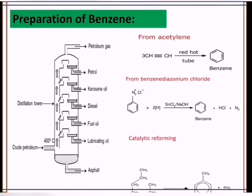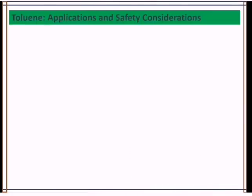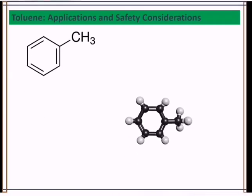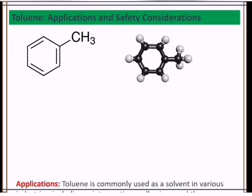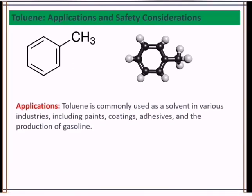Let's look at applications and safety considerations of toluene. Toluene is a derivative of benzene with a methyl group substituted for one of the hydrogen atoms in the benzene ring. For the applications, toluene is commonly used as a solvent in various industries, including paints, coatings, adhesives and production of gasoline.